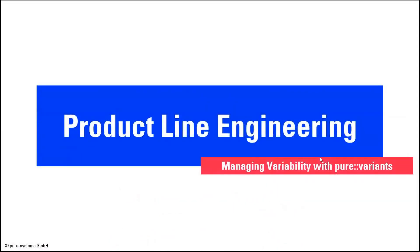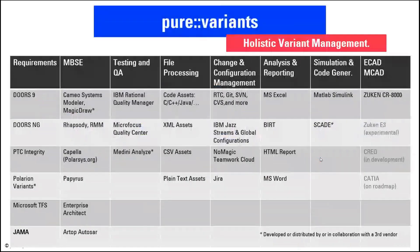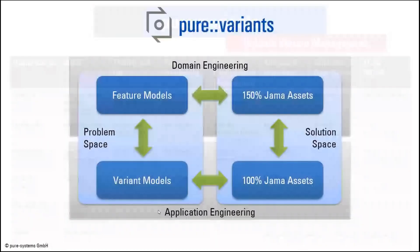I will start with a conceptual overview on how product line engineering with Pure Variants is realized. Product line engineering crosses different engineering disciplines, and Pure Variants has been implemented across different tool categories — for example, requirements, model-based system engineering, testing, and so on. Pure Variants comes with more than 30 integrations to other engineering tools, including an integration to JAMA, that enable you to follow a holistic variant management approach. Of course, it depends on what a third-party tool offers and how open the API is, so that we can easily integrate.